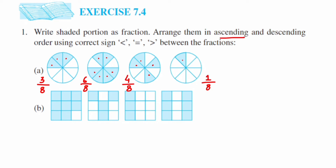Now that we have the fractions, we will arrange them in ascending and descending order, starting with ascending. Ascending means smaller to greater. Since the denominator is the same for all, these are like fractions, so we check the numerator — the smaller the numerator, the smaller the fraction. So 1/8 is the smallest, then 3/8, then 4/8.